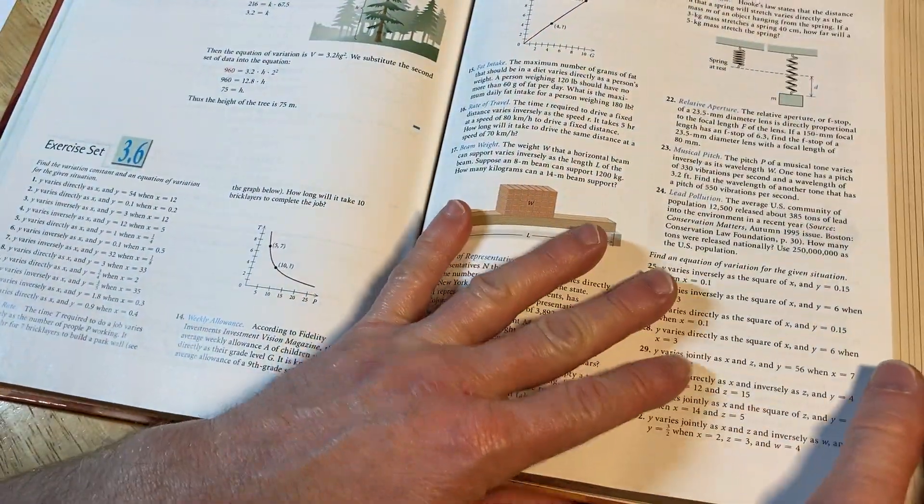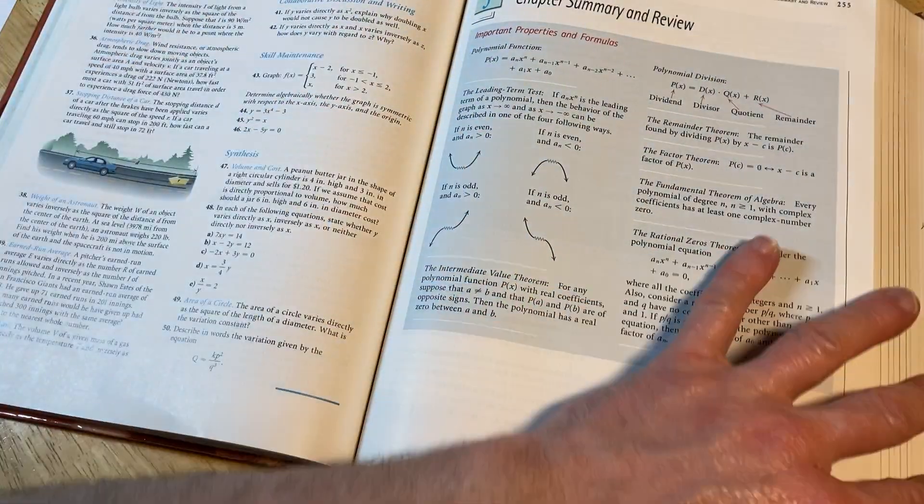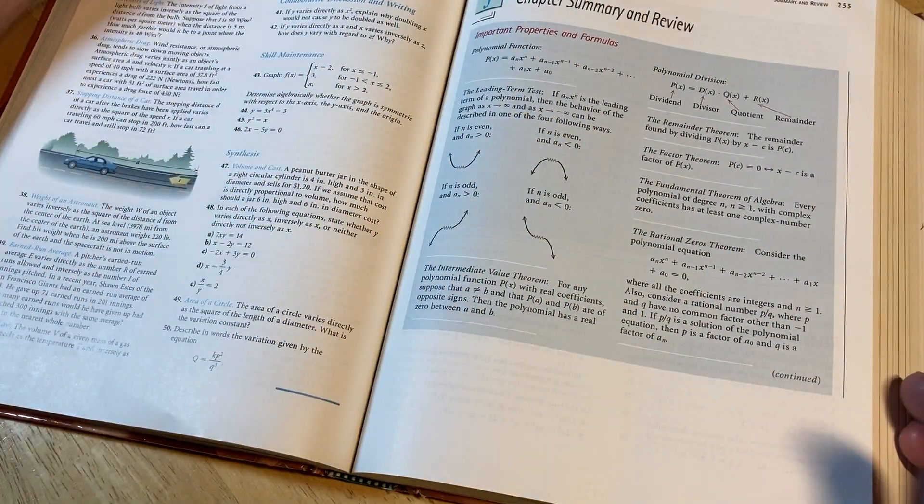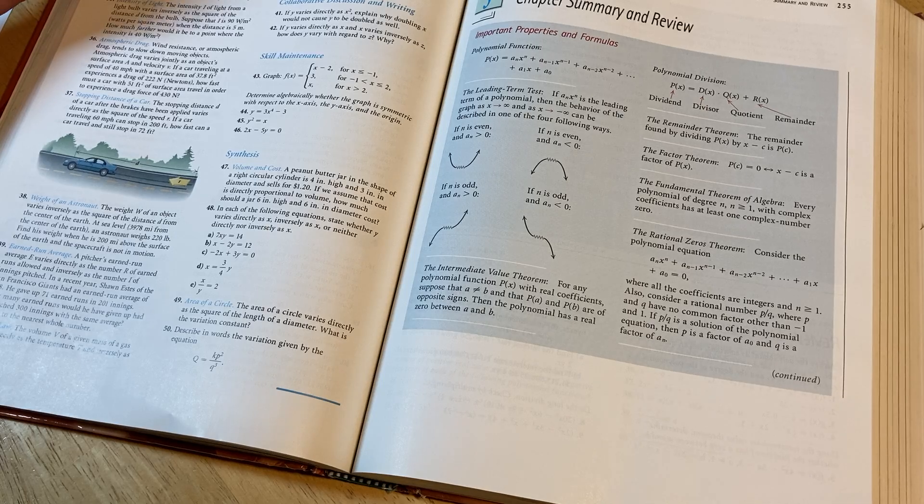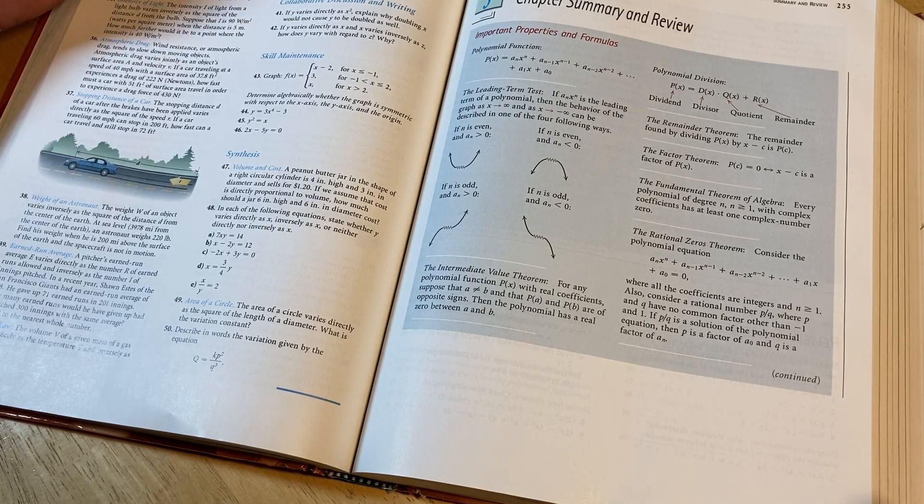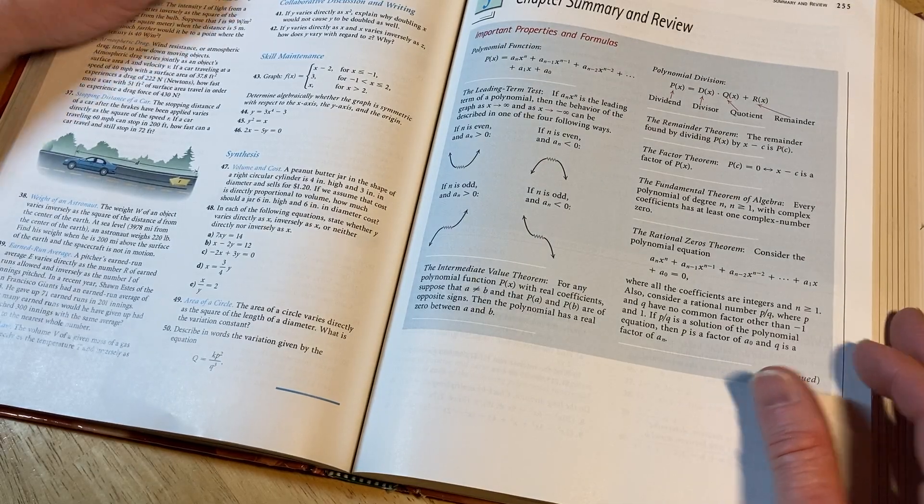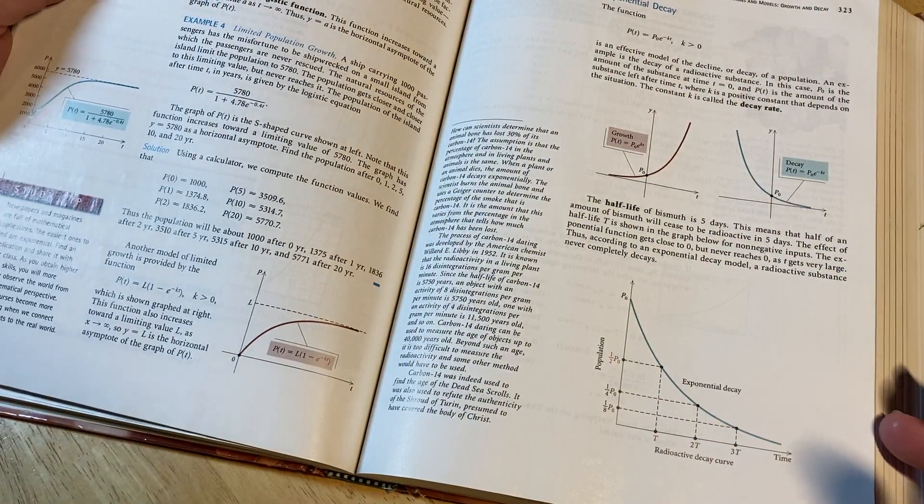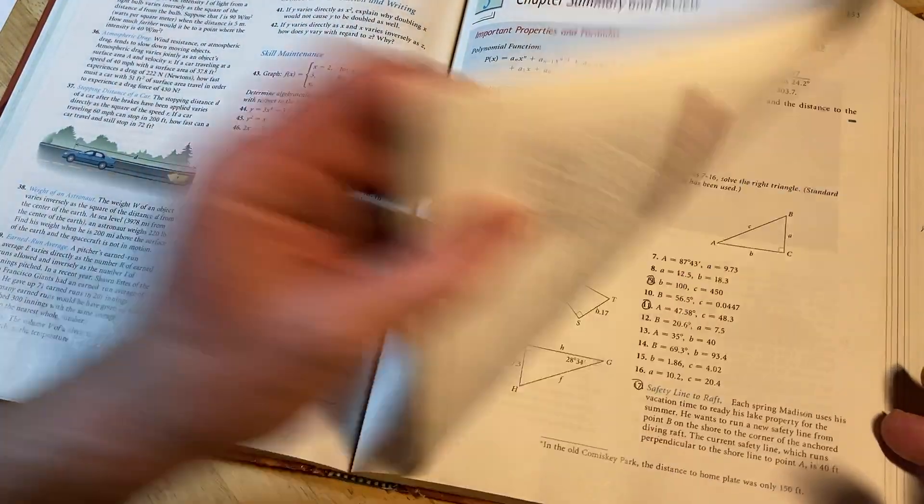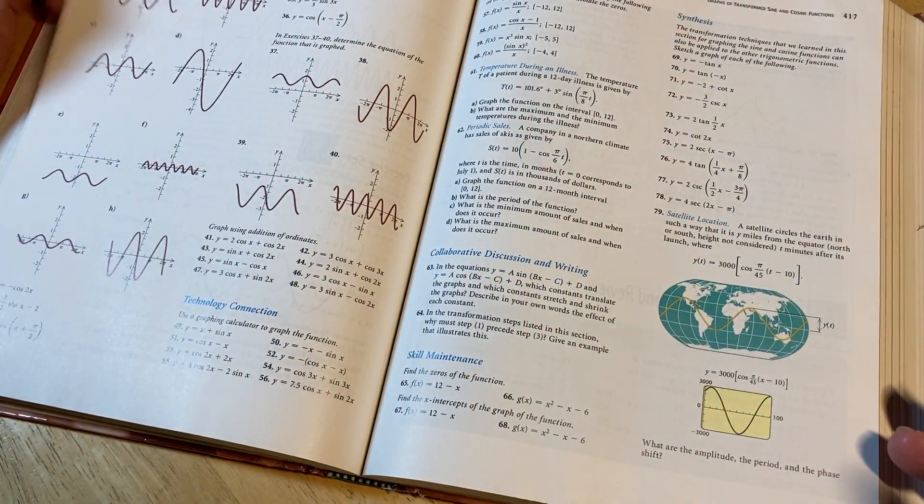These books also have lots of exercises. And so because there's so many exercises, having only the odds ends up having quite a bit of problems. If you have even and odd numbers, half of them are going to be odd. So you're going to get a lot of exercises with answers in each section.